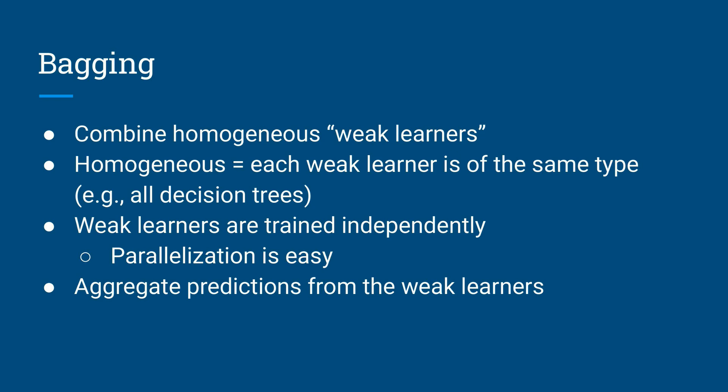Bagging, or bootstrap aggregating, combines homogeneous weak learners. When I say homogeneous, what I mean here is that the weak learners are all the same type of model. For example, perhaps they're all decision trees.